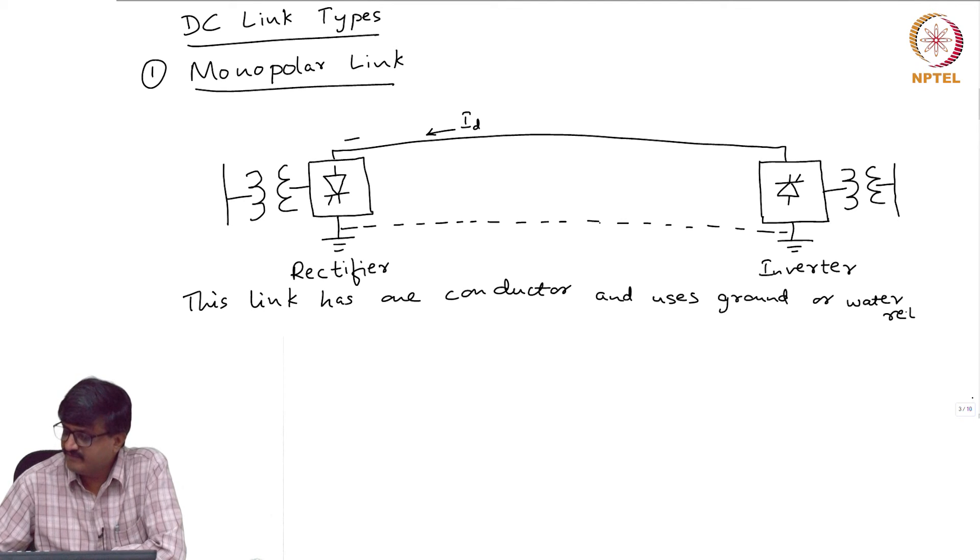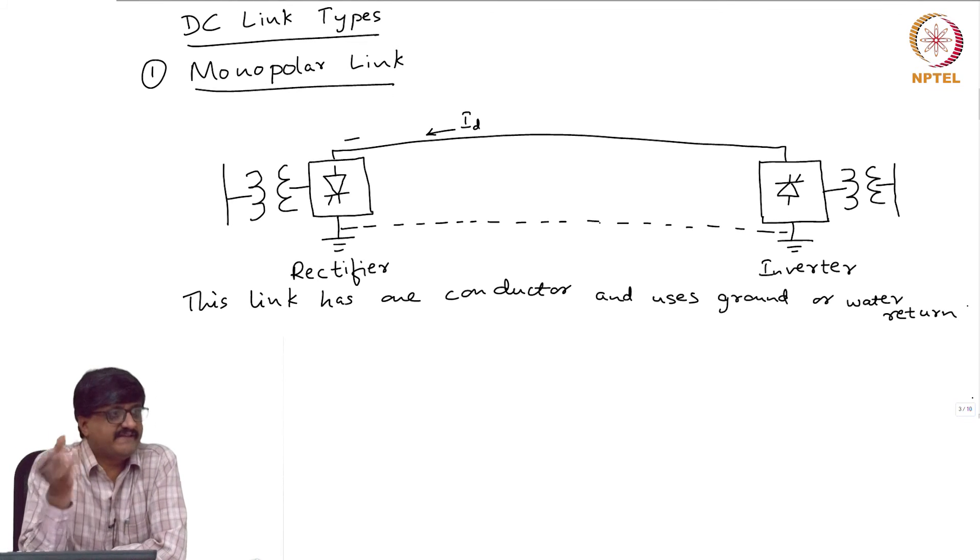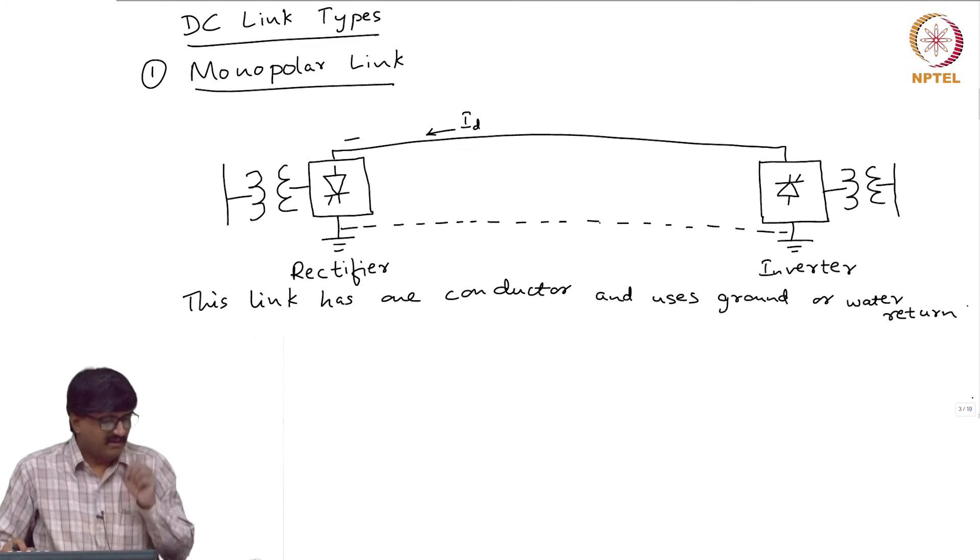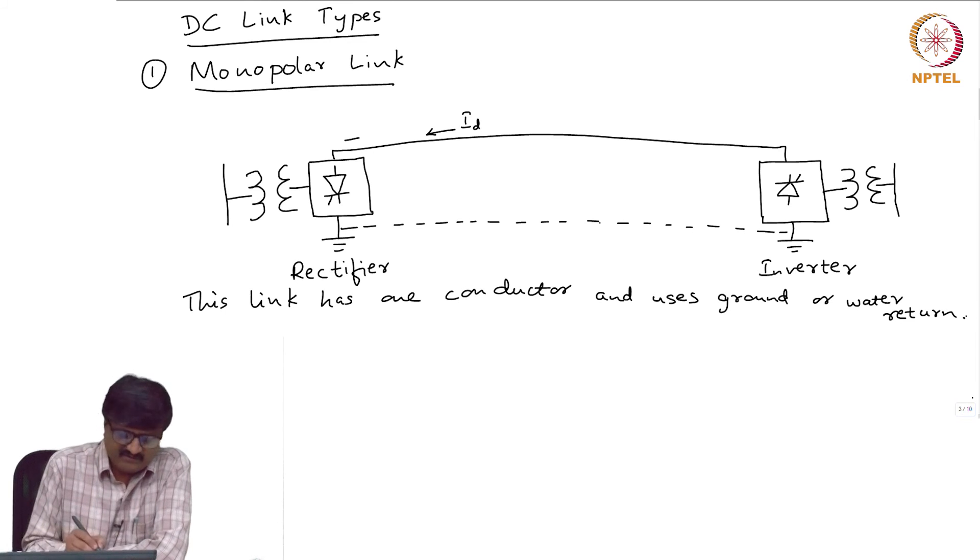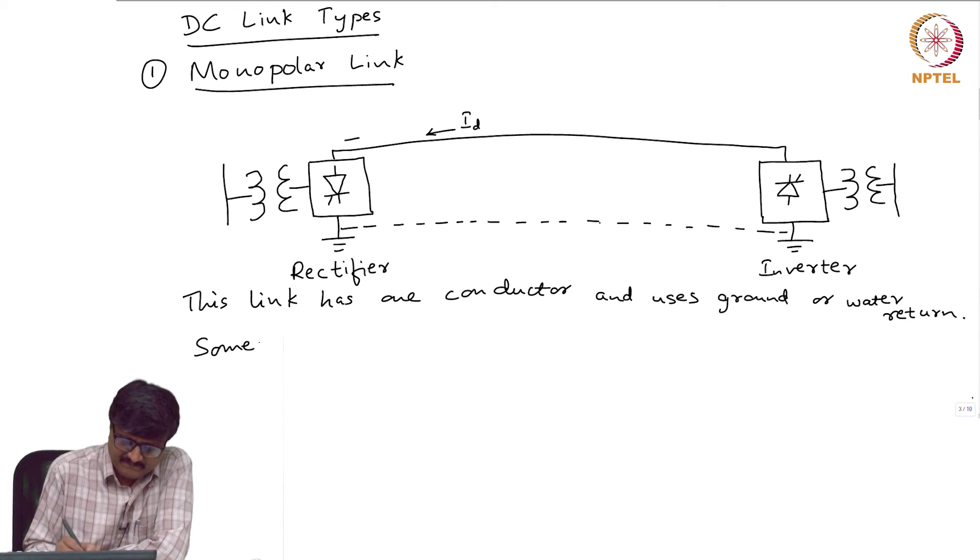If it is for the purpose of underwater transmission, the water itself is used as a path for the return current. And very rarely, metallic return is also used which is buried. Sometimes metallic return is used.